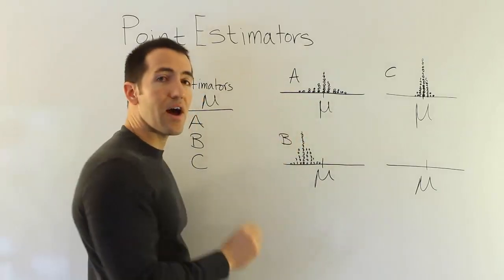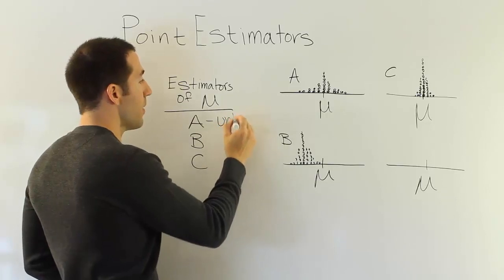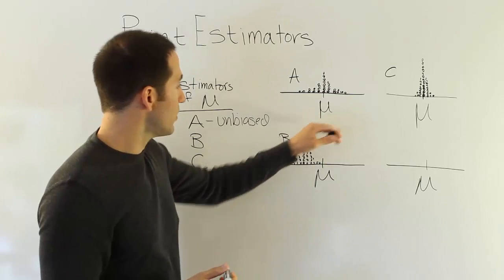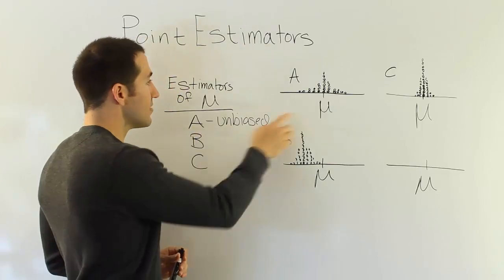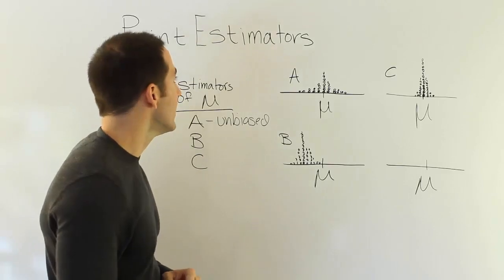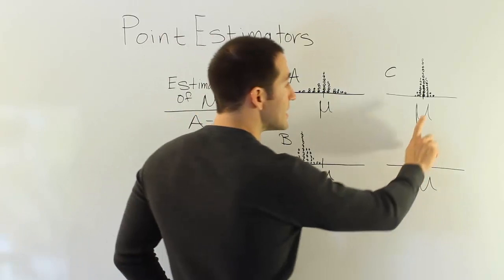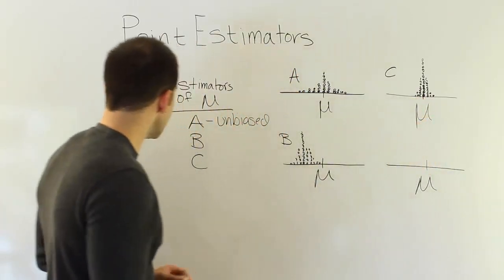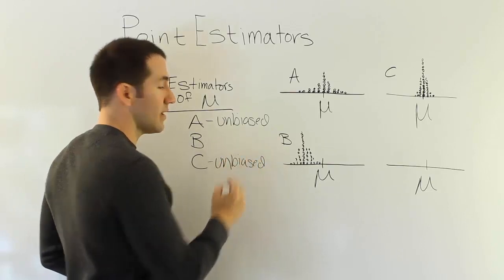We're going to call that trait unbiasedness. So we're going to say here that A is unbiased. A is an unbiased estimator of mu, because its average value is mu. It's the target. That's the thing it's trying to estimate, and its average is that thing. That makes it unbiased. So that's a really nice trait. Now let's look at C. C also has that property, it seems. It seems like C also could be said to be balanced around the mean. So we're also going to say that C is also unbiased.